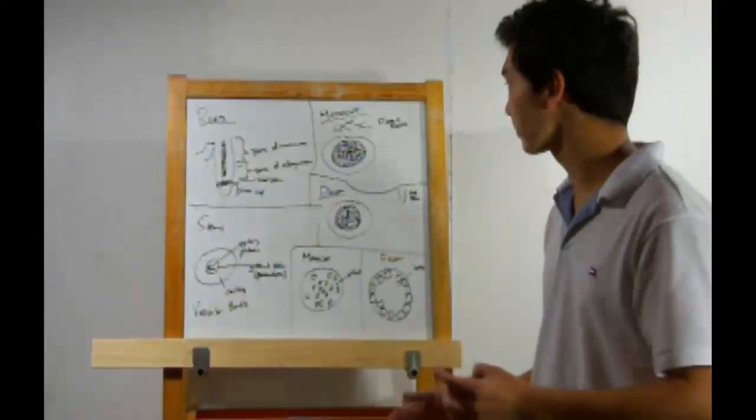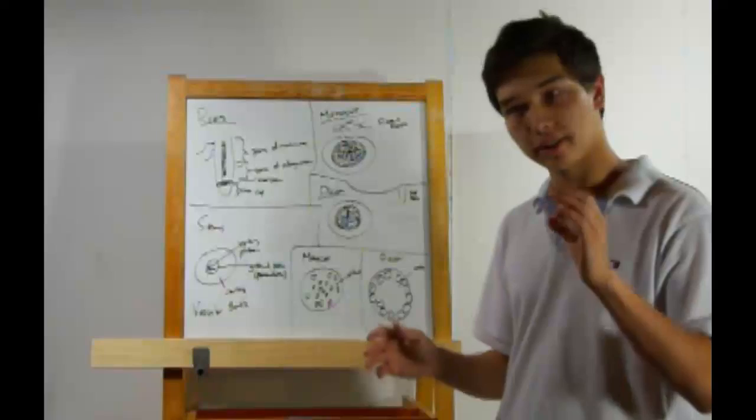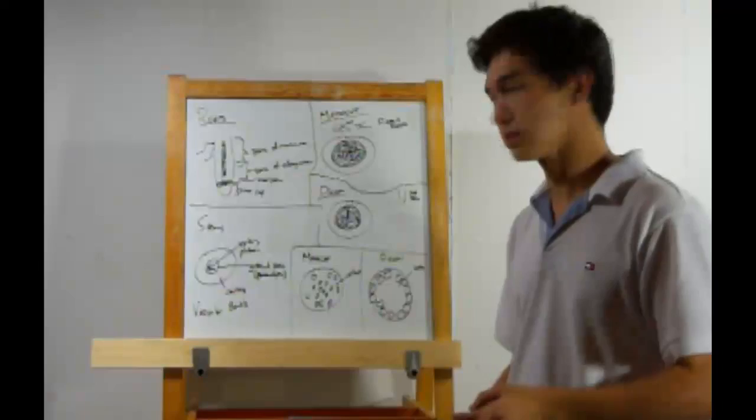All right, that's a vertical cross-section. We're going to start looking at horizontal cross-sections. Now, there are some differences between monocots and dicots, two different kinds of plants, when it comes to roots.